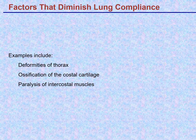Examples of conditions reducing lung compliance include deformities of the thorax, calcification or ossification of the costal cartilage attached to the ribs making it stiffer, and paralysis of the intercostal muscles — all make breathing more difficult.